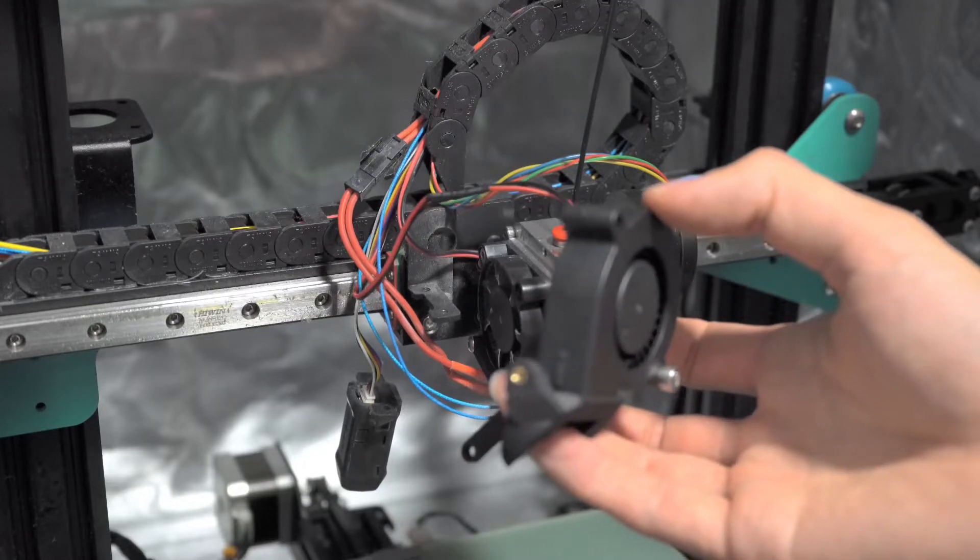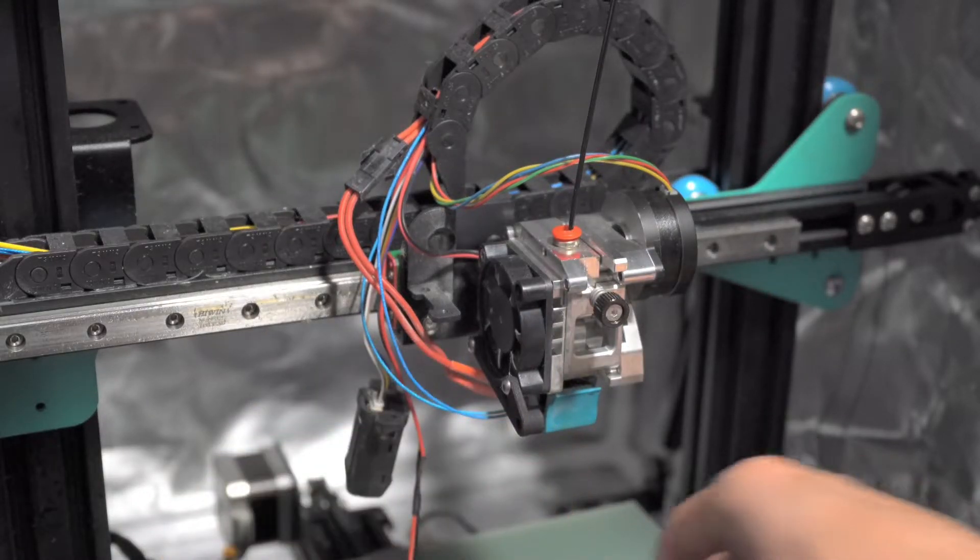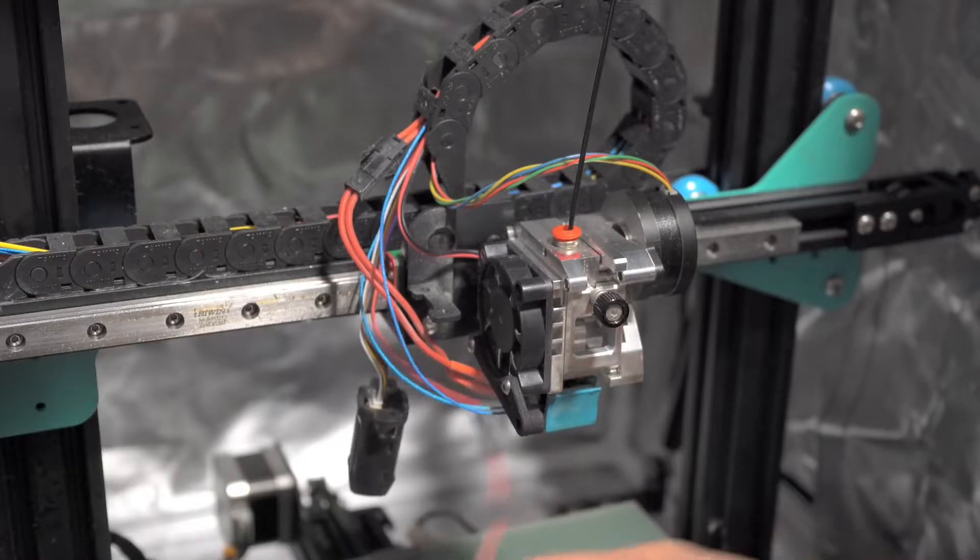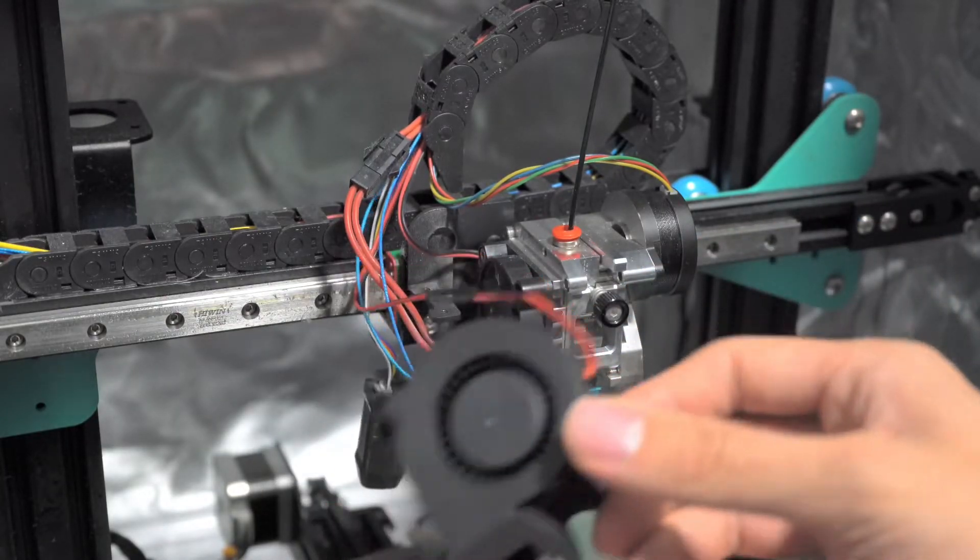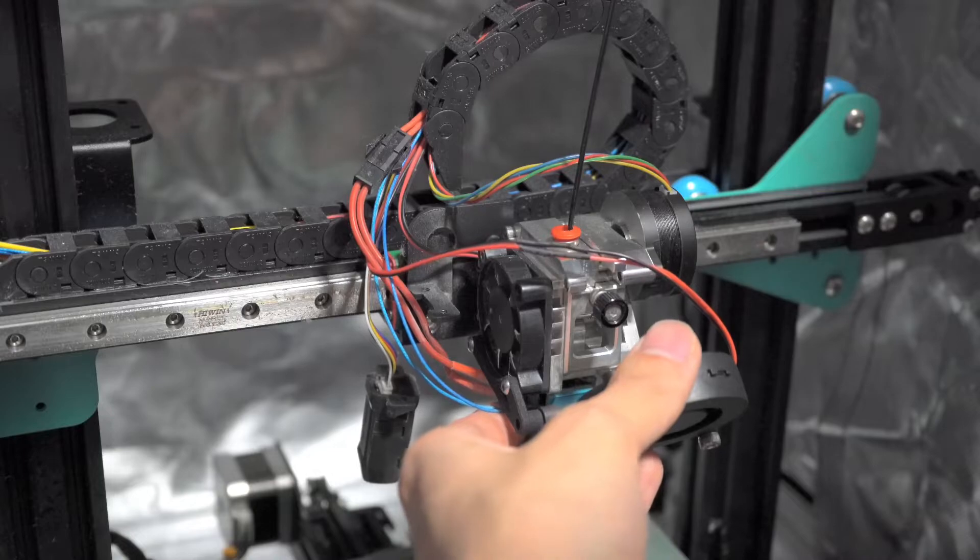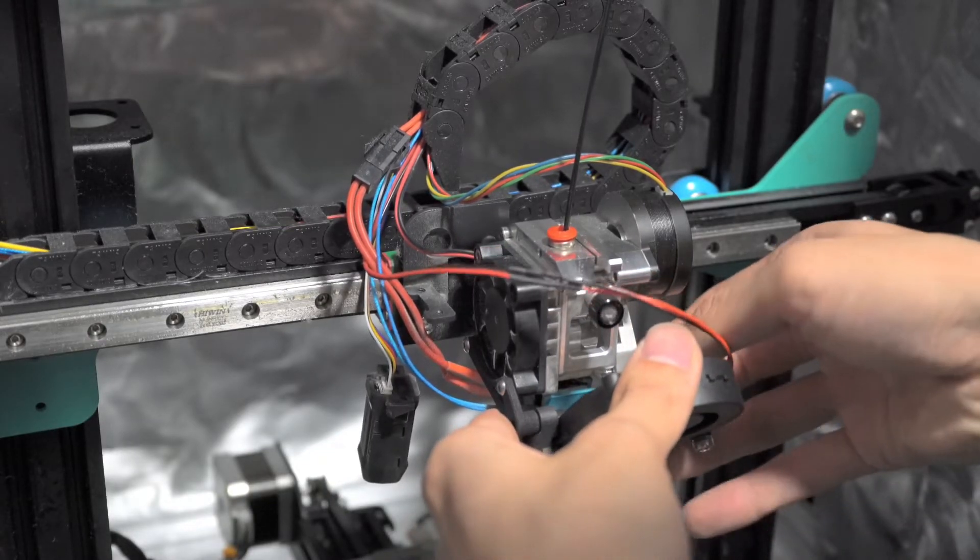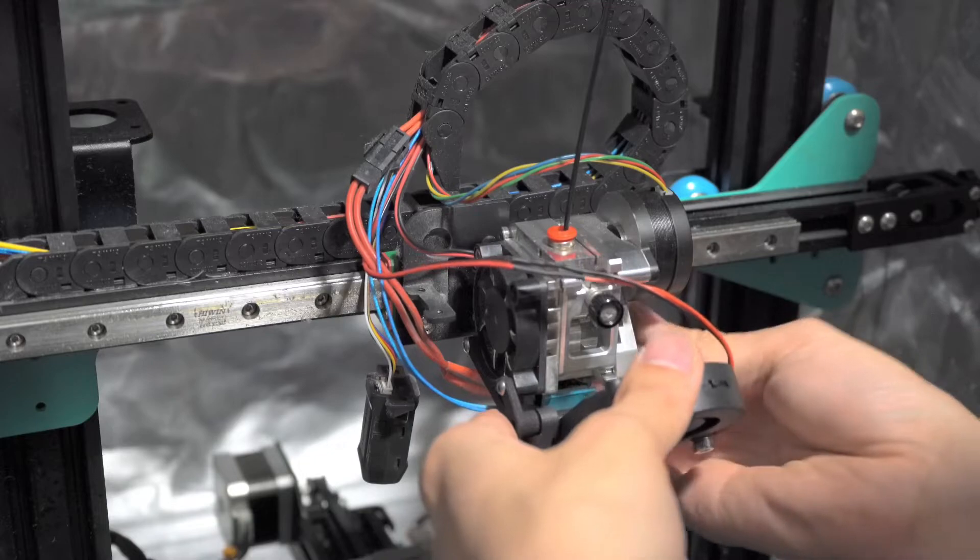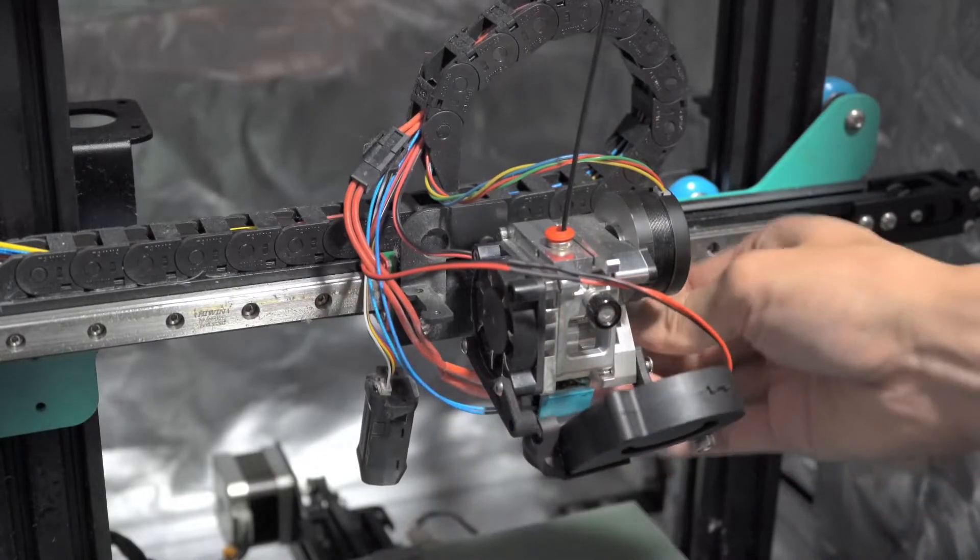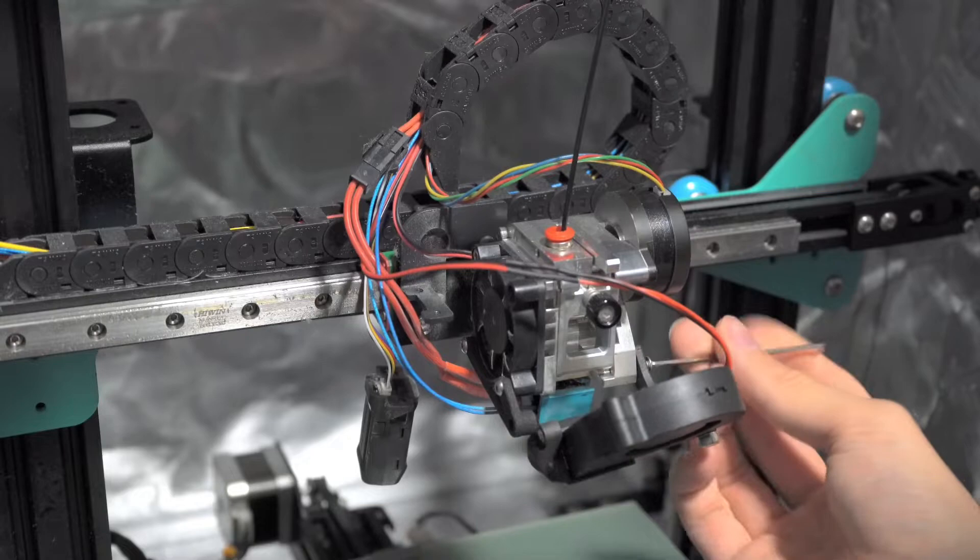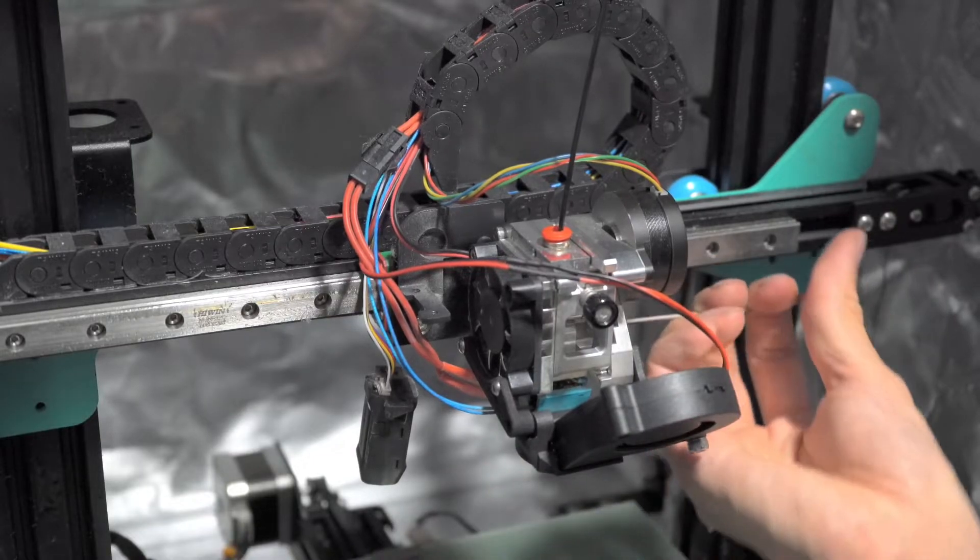Okay, let's go to the next step. After you screw the fans here, just place it like this. And use M3 8mm, two pieces to attach it like this. There we go.